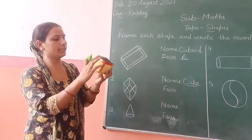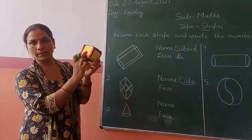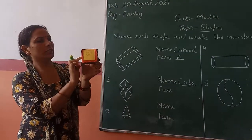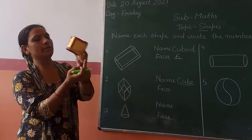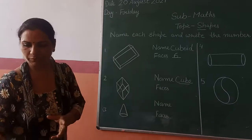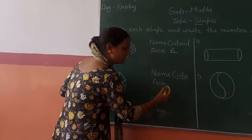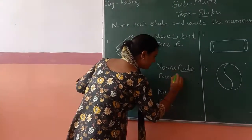Now let's see. 1, 2, 3, 4, 5, and 6. The cube's face count is 6. Equal to the cuboid - second standard - 2, 3, 4, 5, and 6.